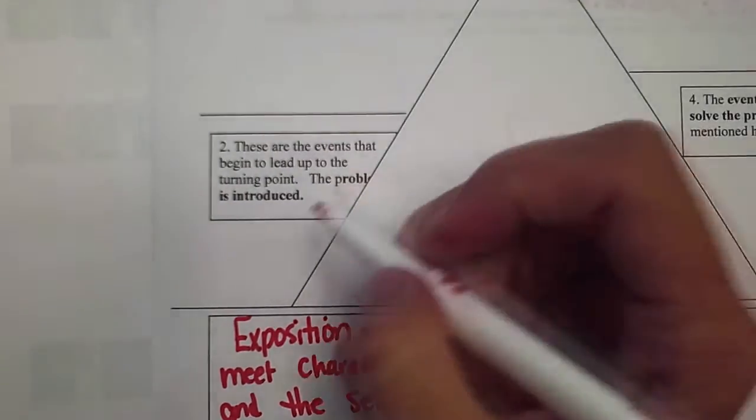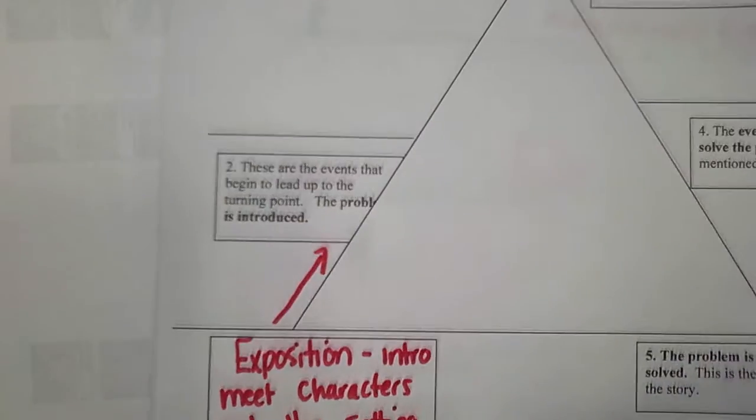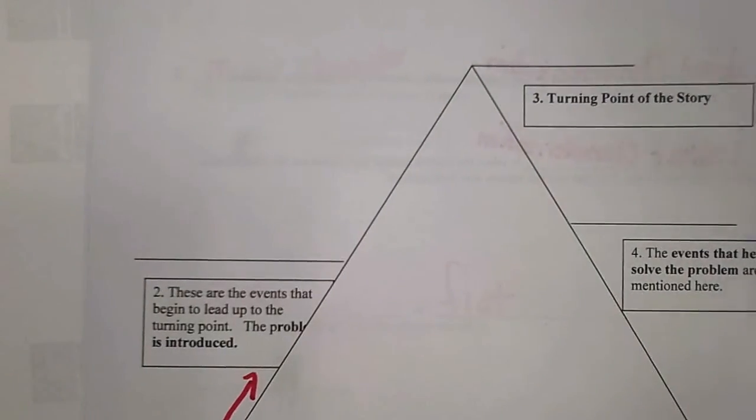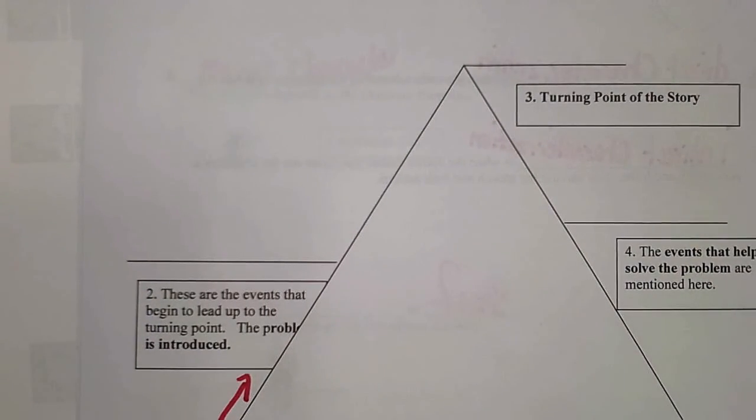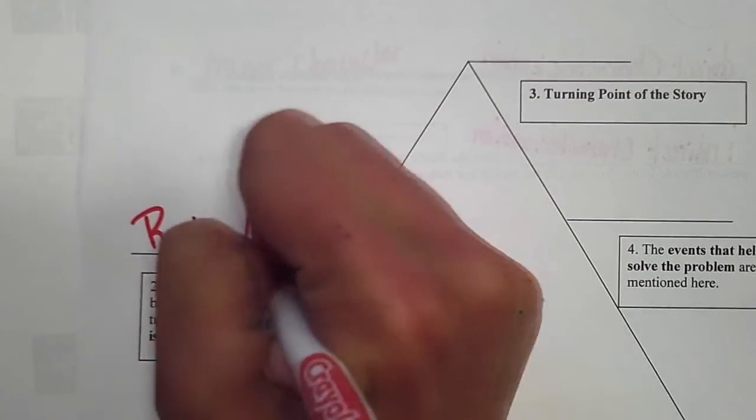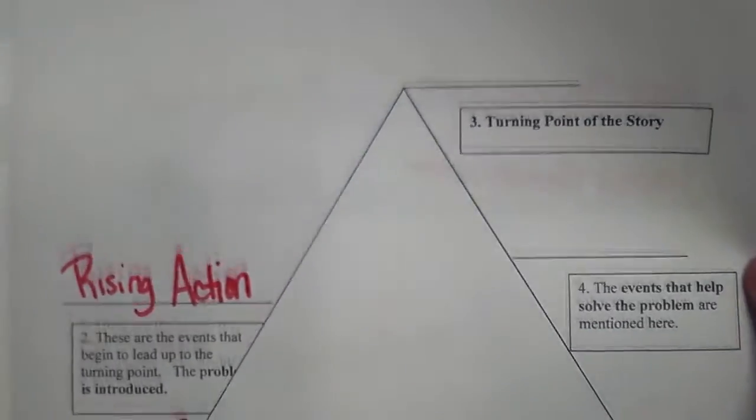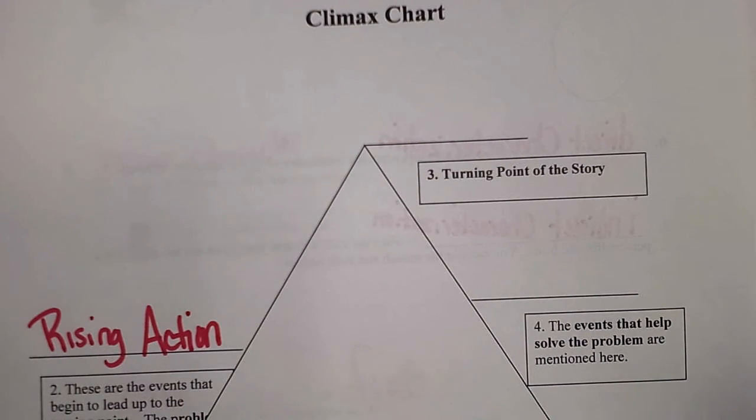Then as we advance up the climax chart or up the mountain, we have the rising action. These are the events that begin to lead up to the turning point. The problem is introduced. We may have more than one problem, but this is where the first problem usually takes place.